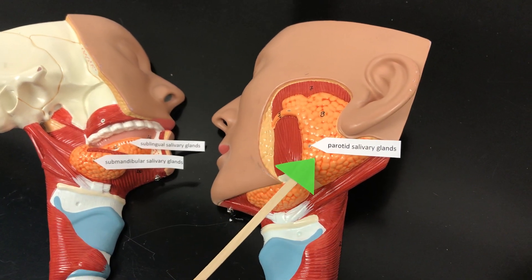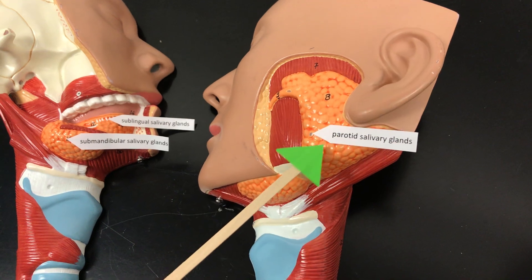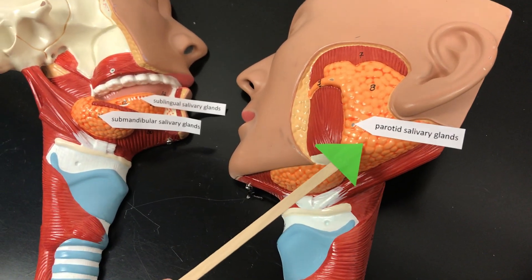So the parotid salivary glands are near the ear. Otid for ear, para for near. They're the largest.